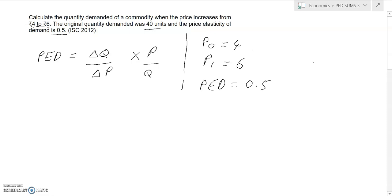We also have the original quantity demanded. So let's think about Q0. Q0, or simply Q, we have as 40 units.